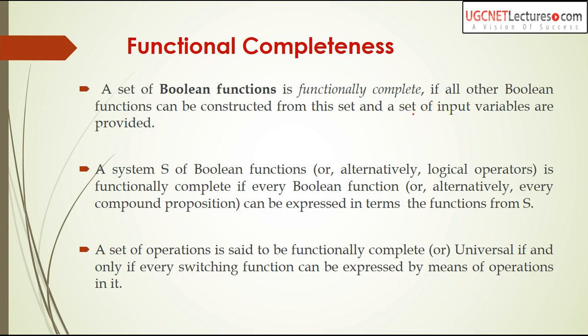What is functionally complete? You are given a boolean function — some operators like AND, OR, and NOT. From these basic operations you can construct more derived operations. For example, basic operations are AND, OR, and NOT, and from AND, OR, NOT you can construct NAND, NOR, XNOR, XOR and all these operations. So XOR, XNOR, NOR, NAND are all derived operations, derived from the AND, OR, and NOT operations.